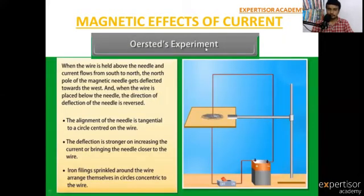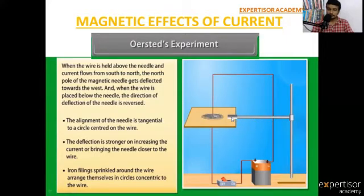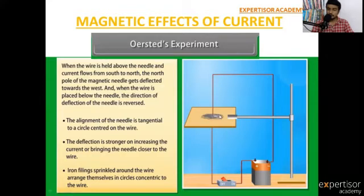Coming to Oersted's experiment. Look here — there is a battery, a switch, and a retort stand. On the insulating plate kept on the retort stand, there is iron powder or iron pieces. This conductor connects with the battery, and current flows through it.